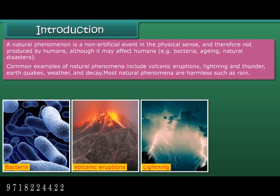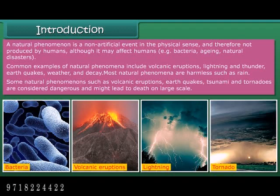Common examples of natural phenomena include volcanic eruptions, lightning and thunder, earthquakes, weather, and decay. Most natural phenomena are harmless, such as rain. Some, such as volcanic eruptions, earthquakes, tsunamis, and tornadoes, are considered dangerous and might lead to death on a large scale.